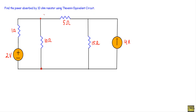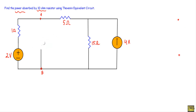We will calculate the power absorbed by this 10 ohm resistor using the Thevenin equivalent circuit. This is our given network and this is the 10 ohm resistor, which will be our load resistor RL connected between terminals A and B. As the first step, we remove this load resistor RL from the network.